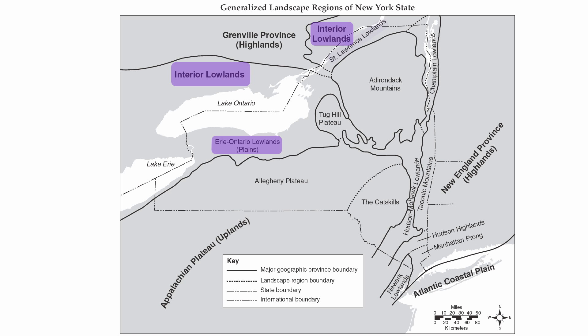The plains regions in New York State include the Erie-Ontario Lowlands, the St. Lawrence Lowlands, the Champlain Lowlands, the Hudson-Mohawk Lowlands, the Newark Lowlands, and Long Island, which is called the Atlantic Coastal Plain.